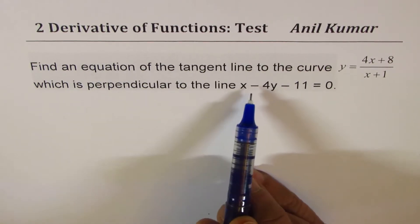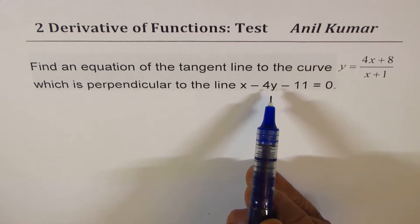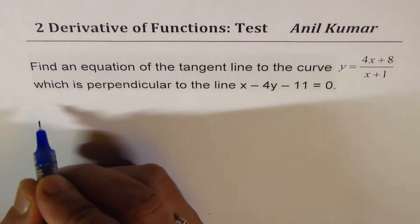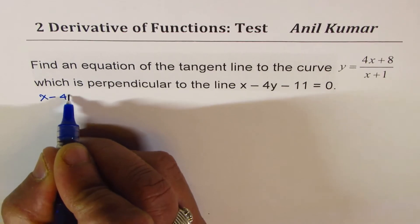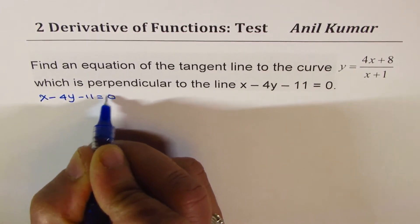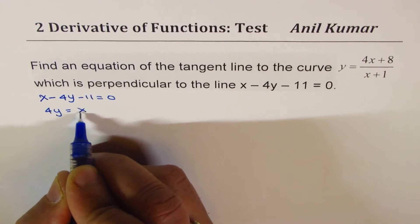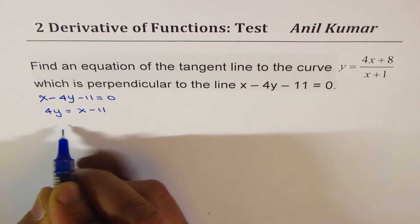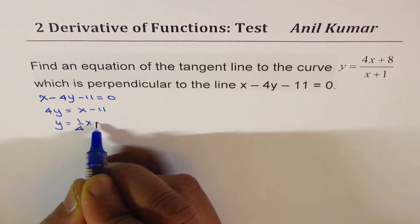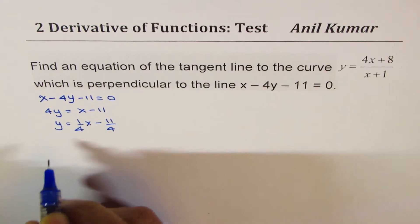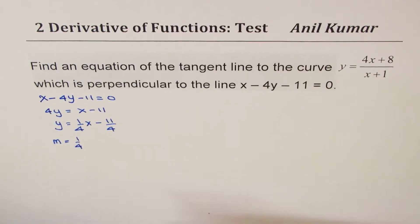Since the tangent is perpendicular to the line, we will find the slope of this line and then the slope of the perpendicular line. We are given x minus 4y minus 11 equals to 0. Rearranging, we get 4y equals x minus 11, so y equals one-quarter x minus 11 over 4. The slope of this line is 1 over 4.